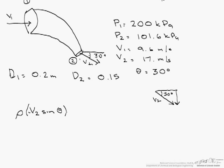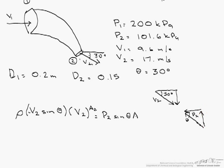Then we find V·n: the normal and the velocity are parallel to each other, so the angle between them is 0. Cosine of 0 is 1, so V·n is just V2. This equals the sum of our forces, and now we look at the pressure, which is P2 coming in. We need the vertical component of P2, and that's P2 sin(theta), and as you can notice it's in the positive direction. Both of these are multiplied by area 2, and this is the force needed to keep the bend in place in the y direction.